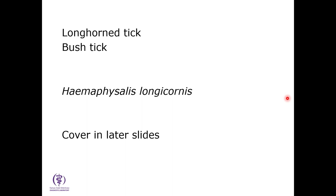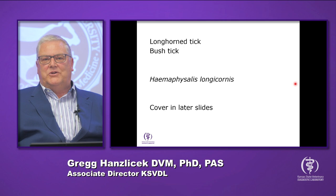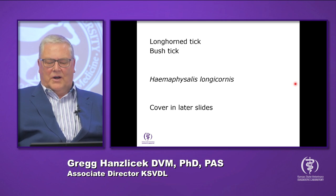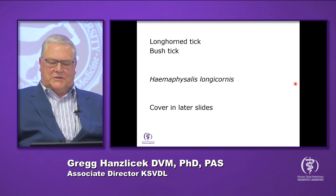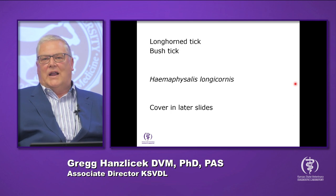The major vector is the longhorn tick, also called the bush tick — Hemaphysalis longicornis. It is considered to be the major vector for this organism, and we'll spend quite a bit of time discussing this tick because it is so highly associated with Theileria orientalis Ikeda in particular.